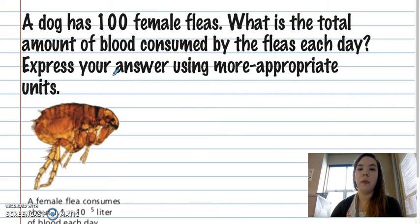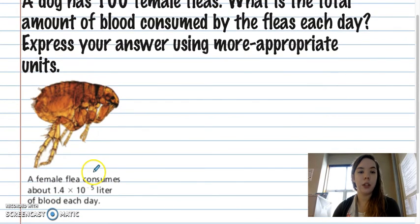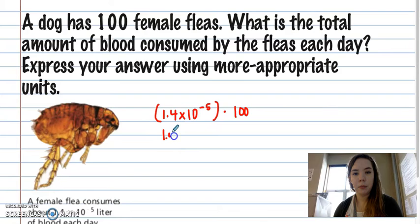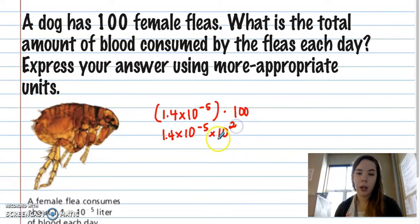A dog has 100 female fleas. What is the total amount of blood consumed by the fleas each day? Express your answer using more appropriate units. So a female flea consumes about 1.4 times 10 to the negative 5 liters of blood each day. And we want to multiply that by 100. Now 100 is the same as 10 squared. This is a 10 with two 0's. 10 squared.